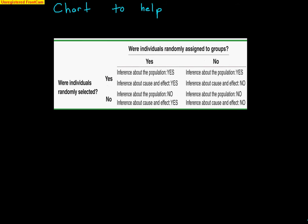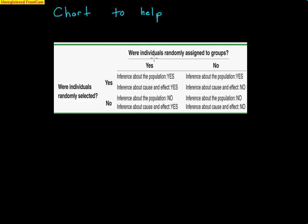Here's a chart to help understand this. We answer two questions: were individuals randomly assigned, yes or no? Were individuals randomly selected, yes or no? If yes to both, you can make an inference about the population and show cause and effect. If you randomly selected but did not randomly assign, you can apply results to the population but cannot show cause and effect. If both are no, you cannot show inference to the population or cause and effect. If you used volunteers — not randomly selected — but did randomly assign them to groups, you can show cause and effect but not population inference.